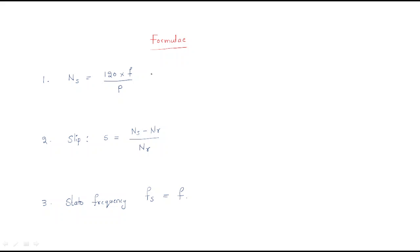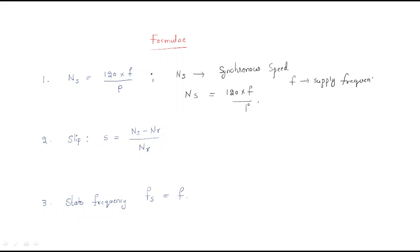Ns equals 120f by P. Ns is nothing but the synchronous speed. Synchronous speed is directly 120f by P. Here f is the supply frequency — because in the three-phase induction motor we are giving the supply, which depends on the supply frequency. P is the number of poles of the induction motor.